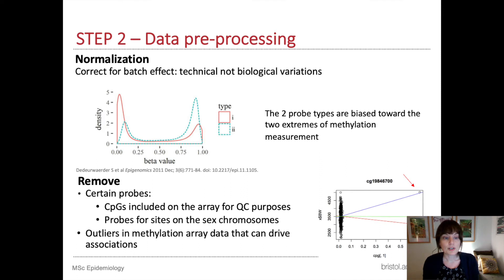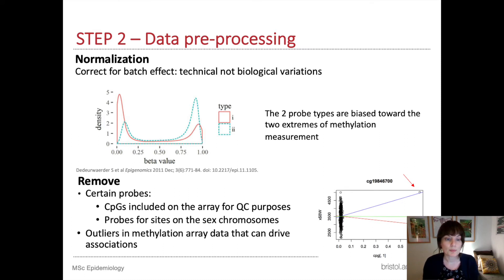Step two in running an EWAS — a really important part — is preparing the DNA methylation data by pre-processing it. In this step we take our DNA methylation data and normalise it. This is necessary because the probes on the array come in two different types, and those two different types can give different results. So we want to bring the data into the same register to make the data from the different probe types directly comparable.